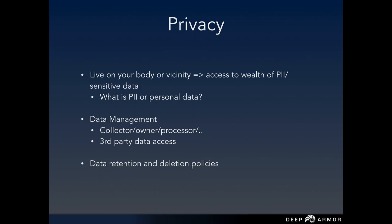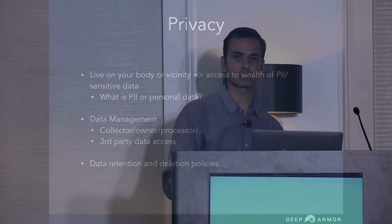On the privacy point of view: we spoke about these classes of products having access to a wealth of data that is personal. These products live and operate in the vicinity of humans — some of them live inside of you, like pacemakers, and there have been attacks demonstrated against them. When it comes to device manufacturers, more often than not it's small and medium-sized businesses and startups that make these products and really want to hit the market very quickly. For these companies, identifying and defining what is personal data and what is PII becomes really tricky. There are various checklists and cheat sheets, but when you try to apply them per product or per platform, it gets really difficult.